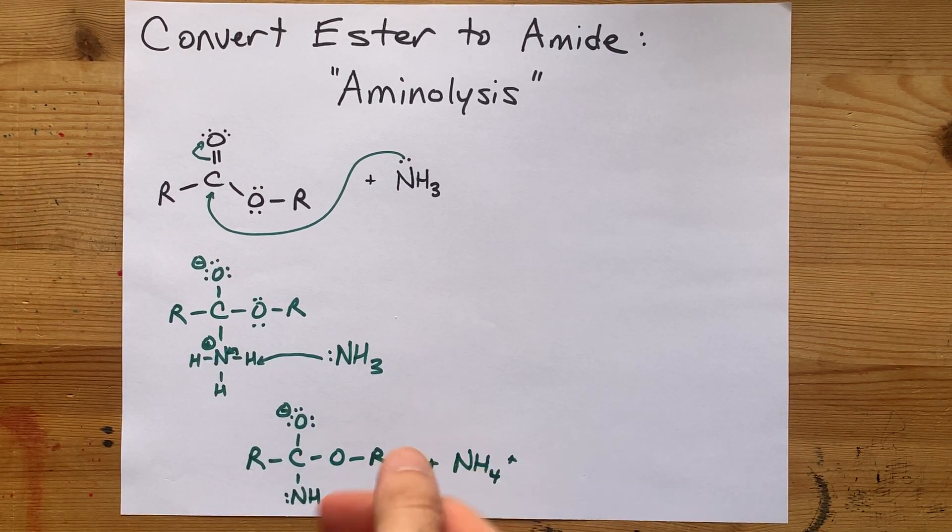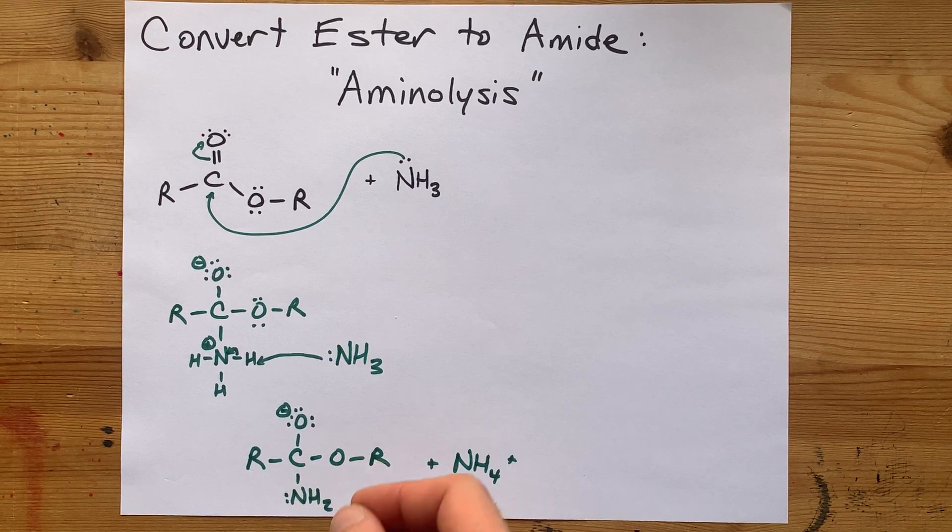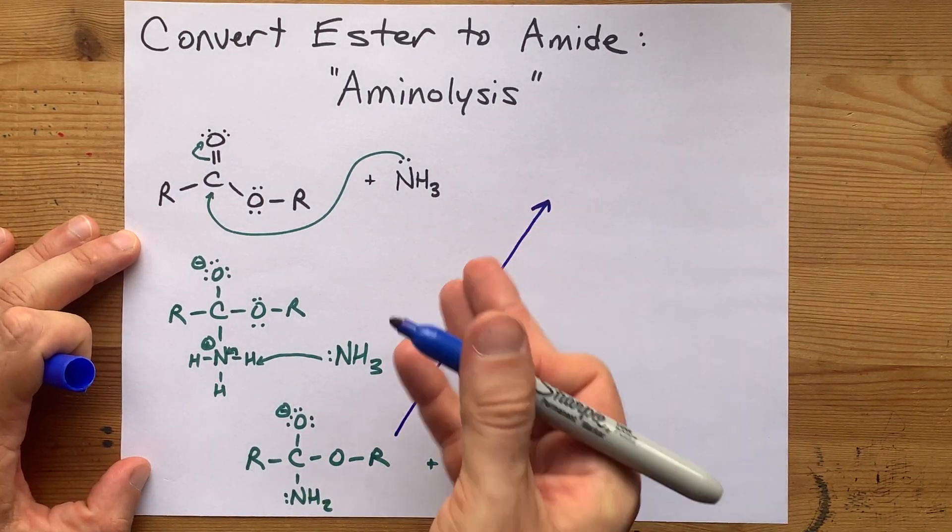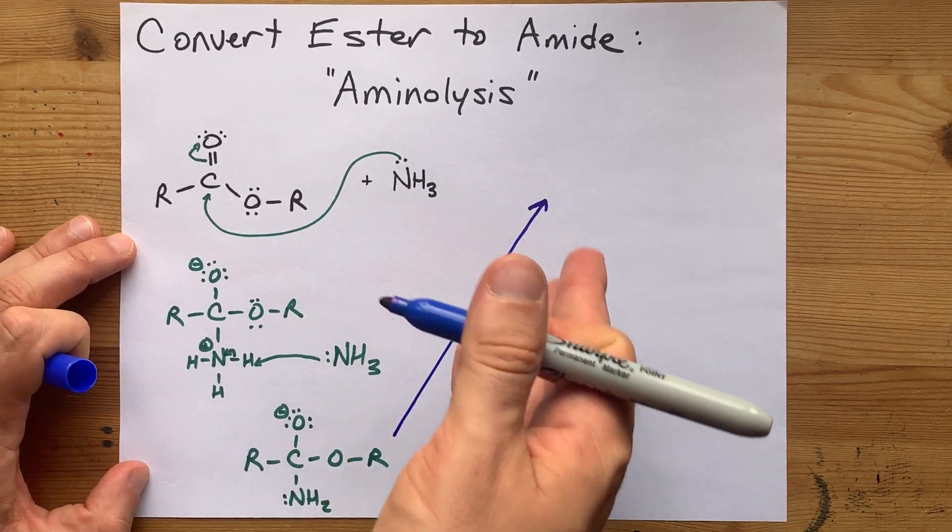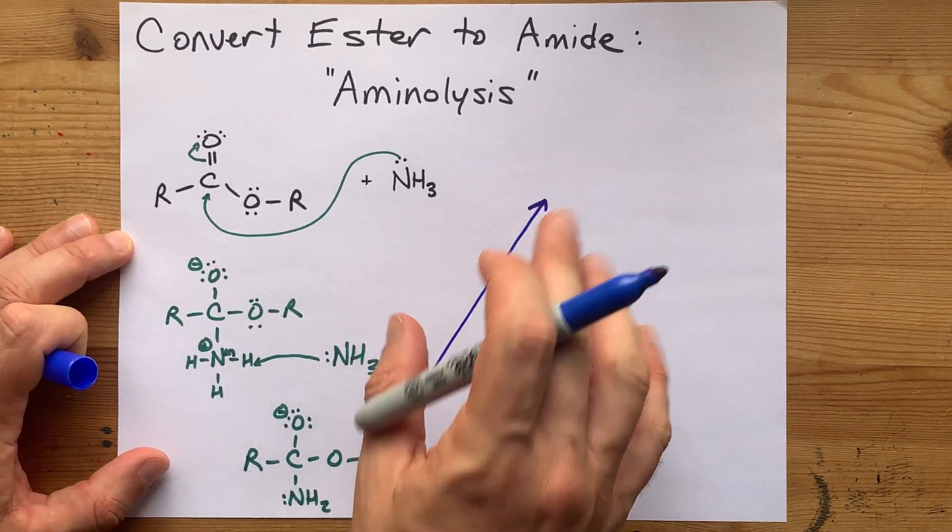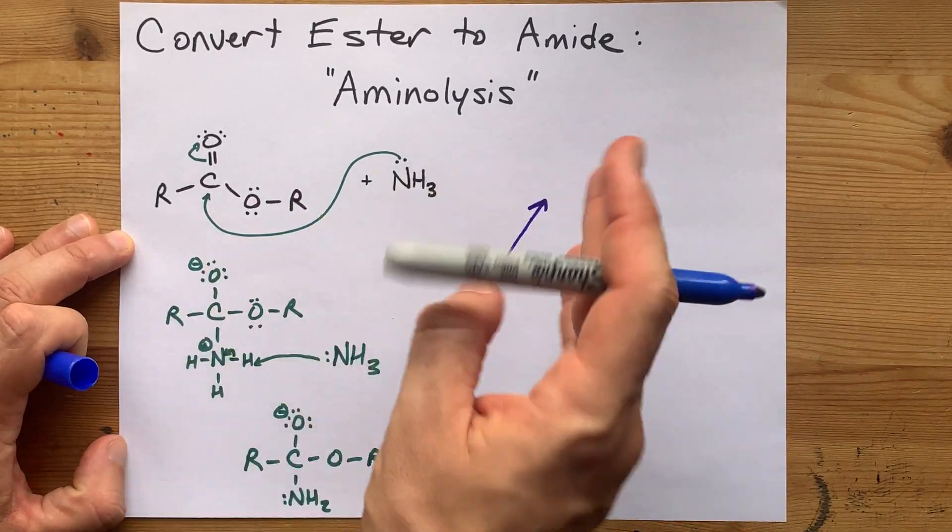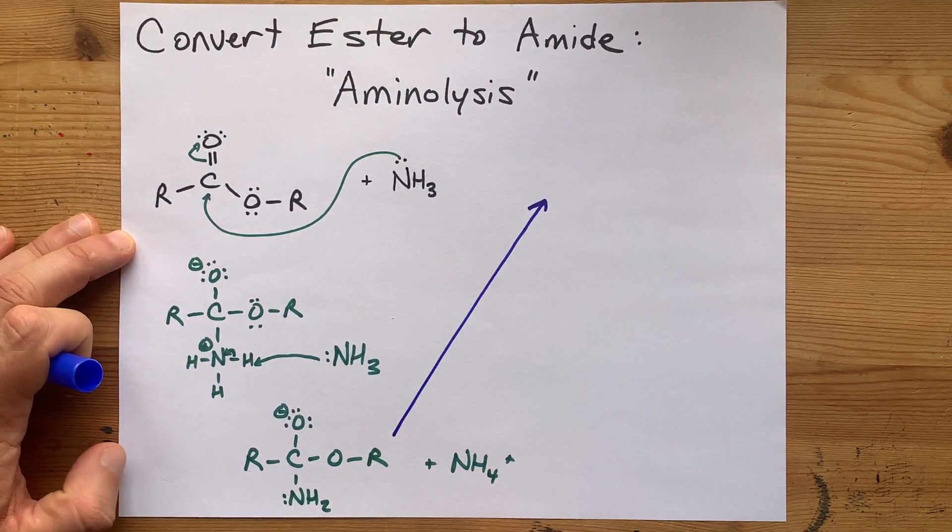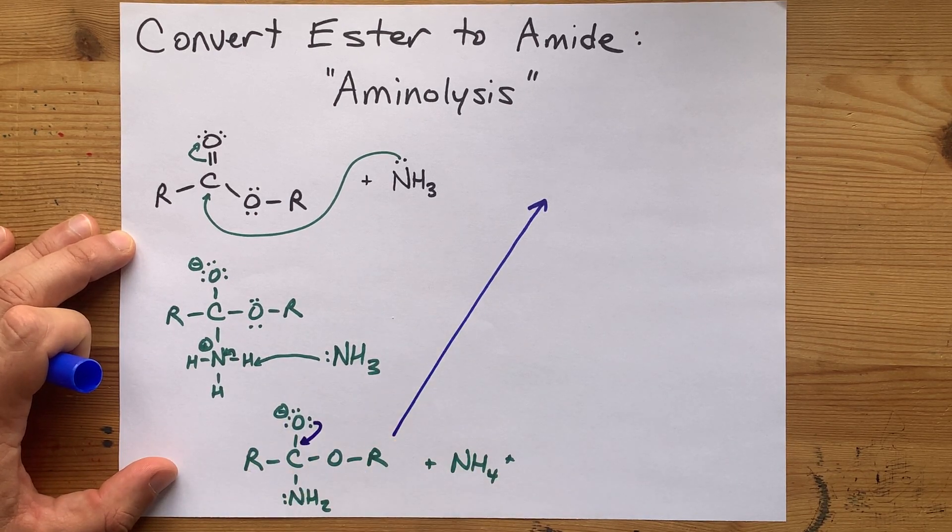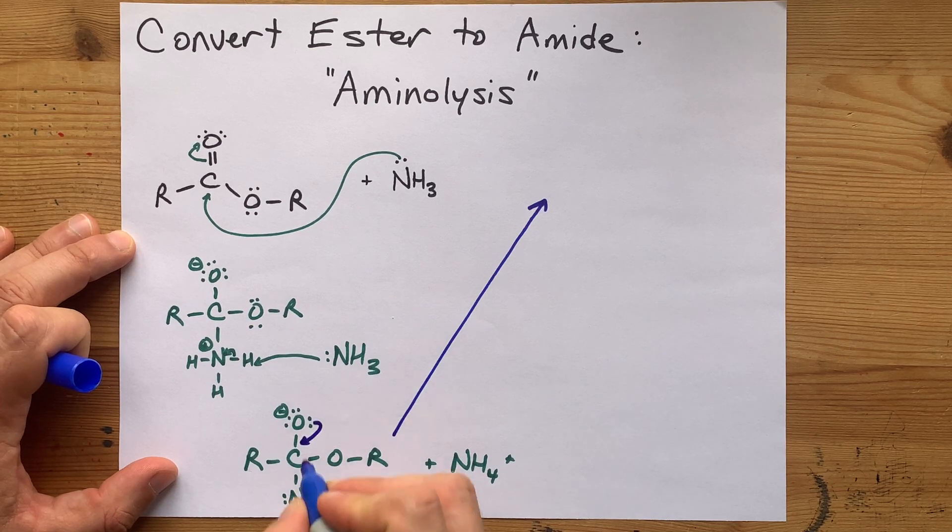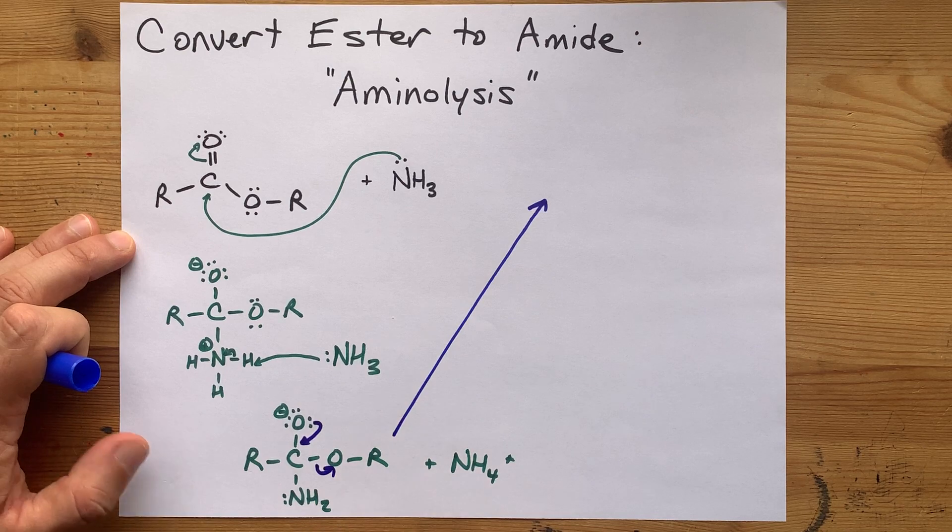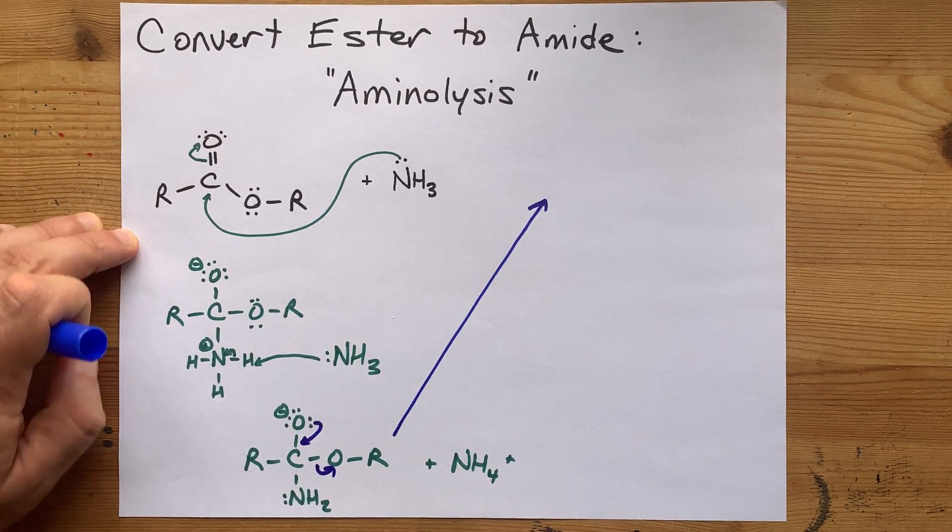Now the OR- ion will fall off just like it does in saponification or the base-induced breaking apart of esters. The single bonded oxygen with the minus charge reforms the double bond with the carbon. And in order to accommodate that as the new fourth bond, the OR- ion has to fall off.